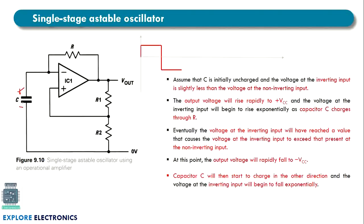The capacitor now starts discharging. Once discharged, the voltage at the inverting terminal comes to zero. The output is at minus Vcc and through the voltage divider the non-inverting terminal voltage becomes greater than the inverting terminal — because the capacitor is discharged — so the output voltage rises again to plus Vcc.